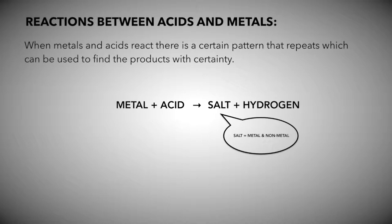And keeping that in mind, let's see an example. Mg, or magnesium, plus HCl, hydrochloric acid, will give you magnesium chloride plus hydrogen. In this case,